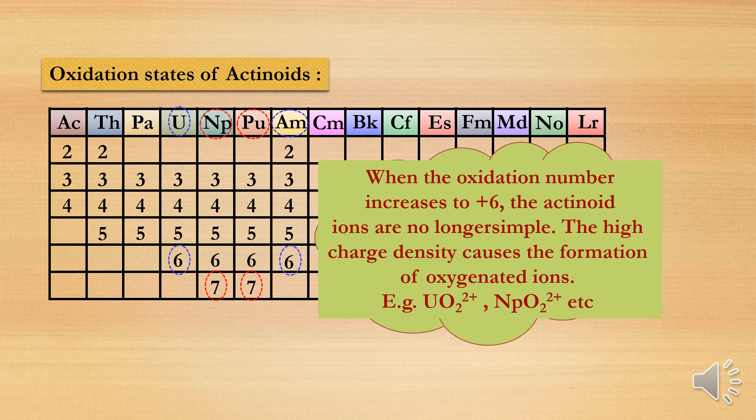When the oxidation number increases to +6, the actinoid ions are no longer simple. The high charge density causes the formation of oxygenated ions, also called oxo-ions. So at +6 oxidation state, formation of oxo-ions takes place.